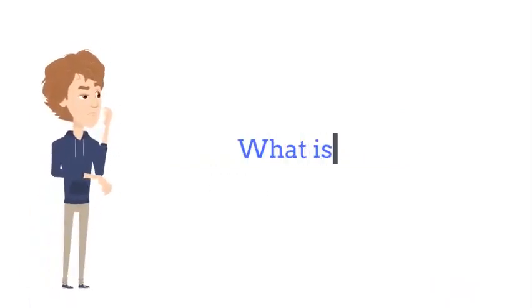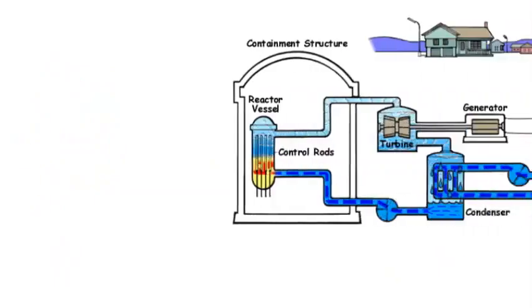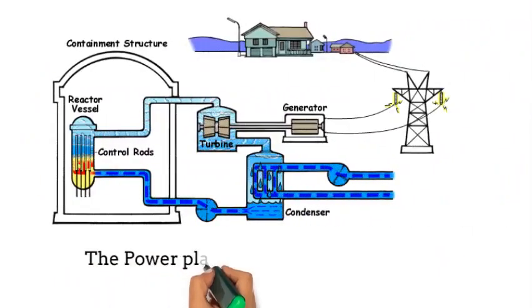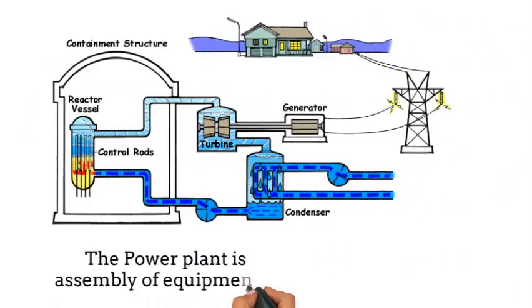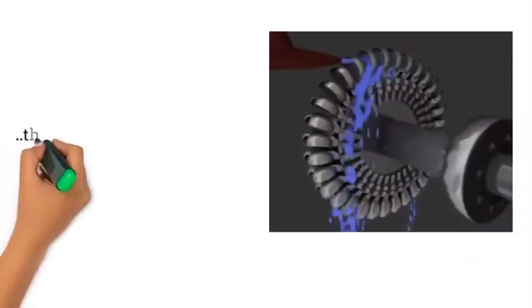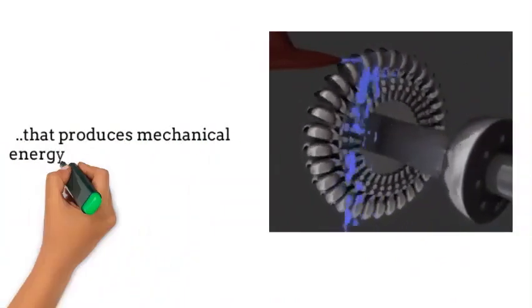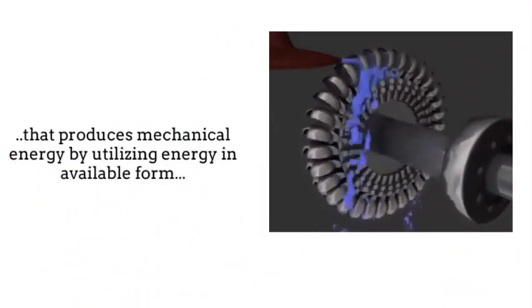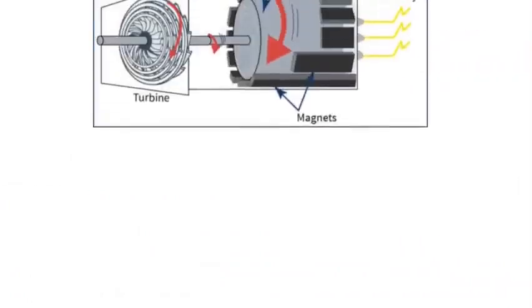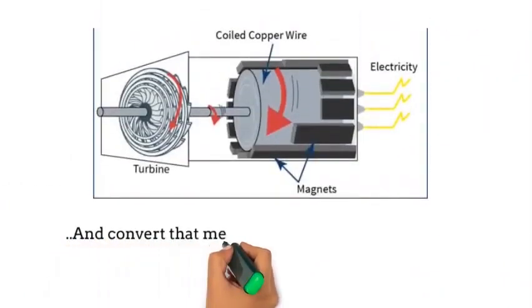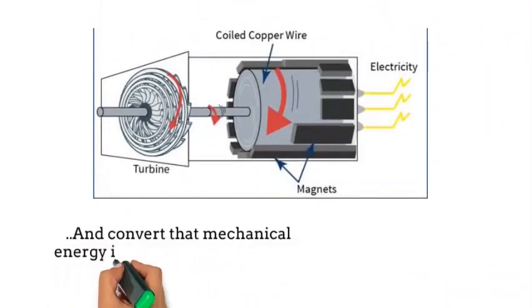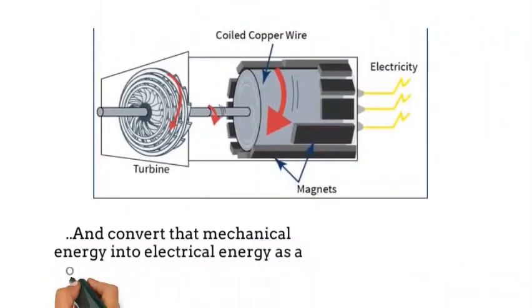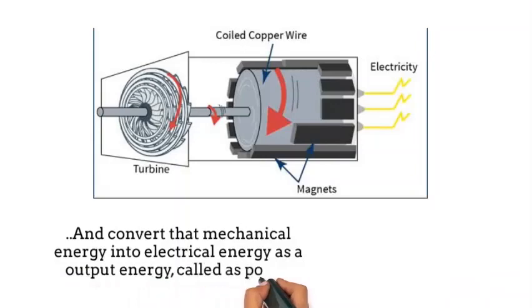What is PowerPlant? The PowerPlant is an assembly of equipment that produces mechanical energy by utilizing energy in available form and converts that mechanical energy into electrical energy as output energy. That is called a PowerPlant.